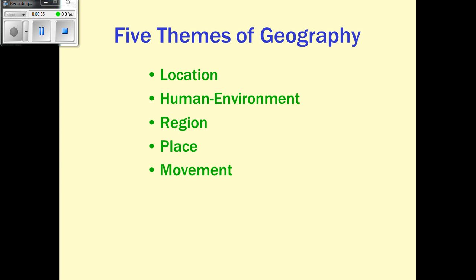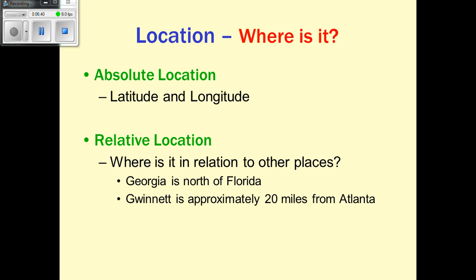The five themes of geography are: location, human-environment interaction, region, place, and movement. Location should always make you ask, where is it? The two types are absolute and relative. Absolute always uses latitude and longitude — the precise coordinates on the map. Relative location is more general: where is it in relation to other places? For example, Georgia is north of Florida, or Gwinnett is approximately 20 miles from Atlanta.